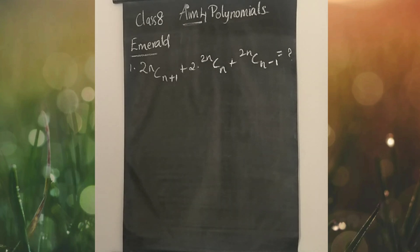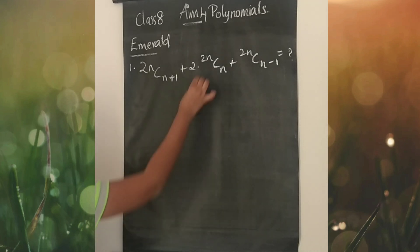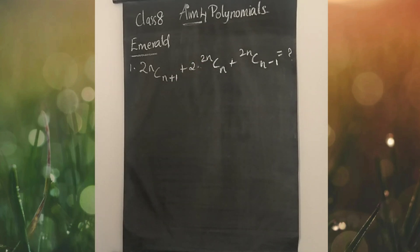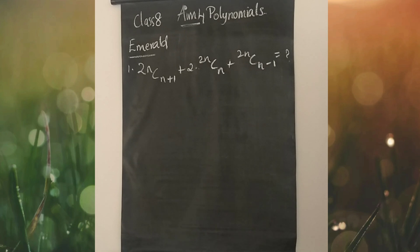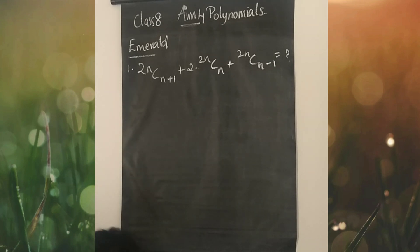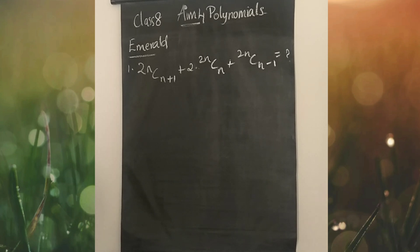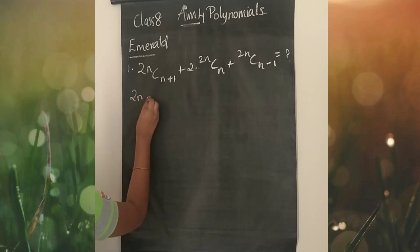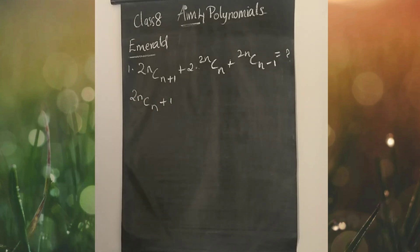First question: 2nCn+1 plus 2 into 2nCn plus 2nCn-1 is equal to what? We have to find that question mark. Let's solve it. We can just write it as 2nCn+1.